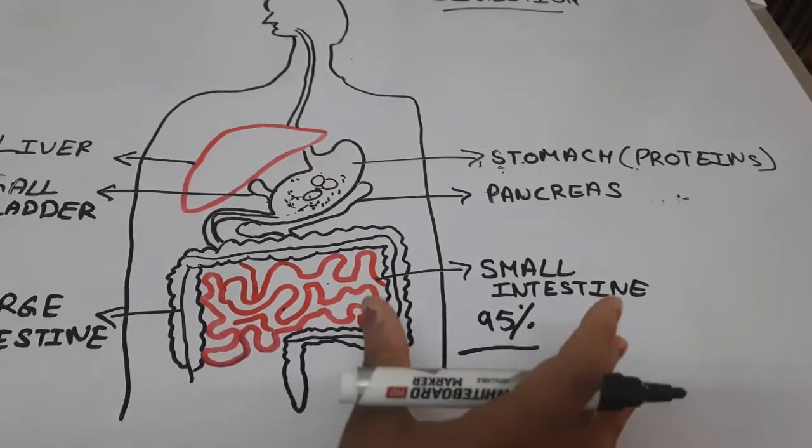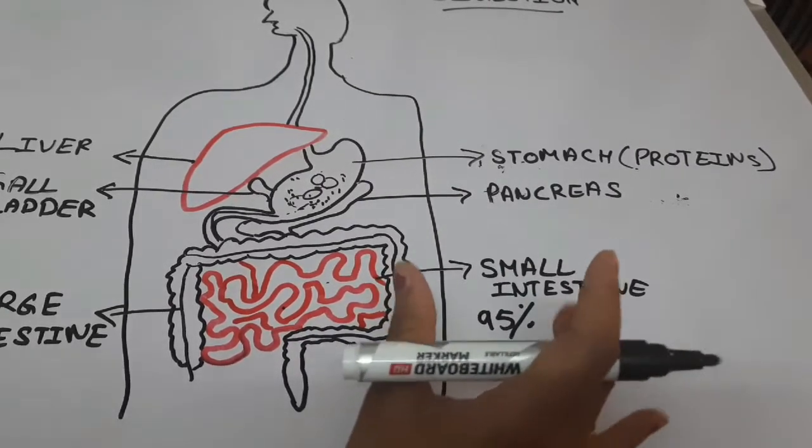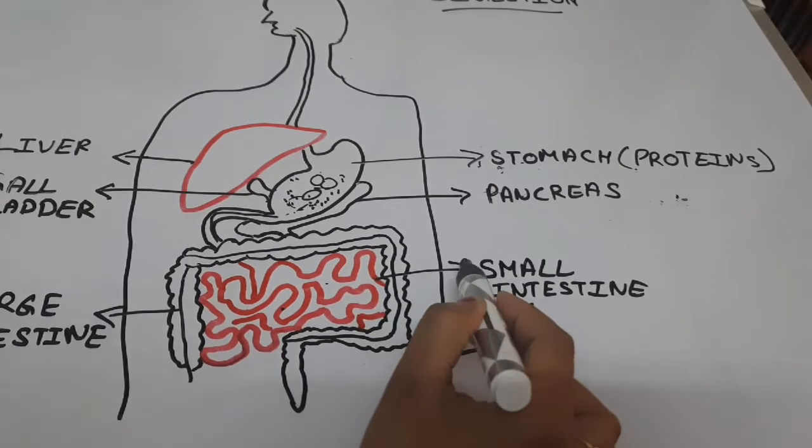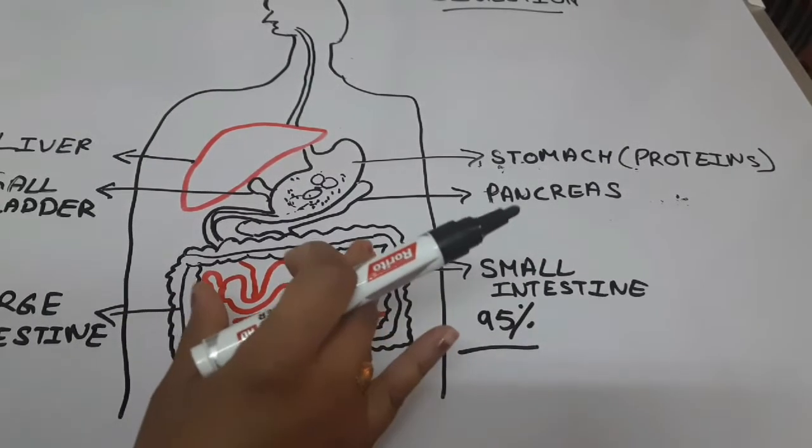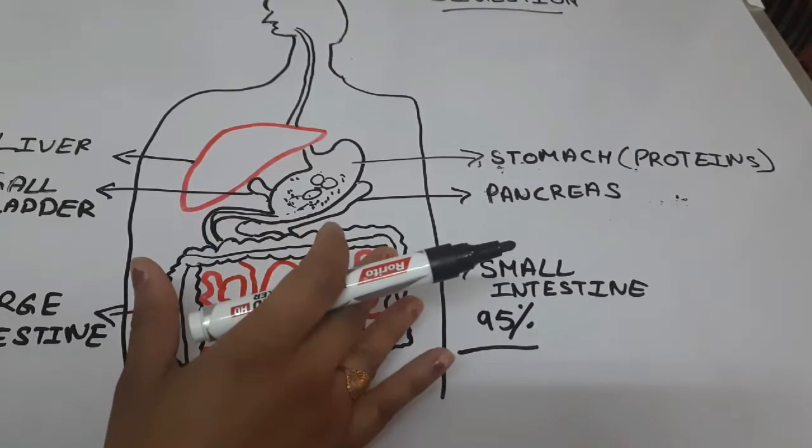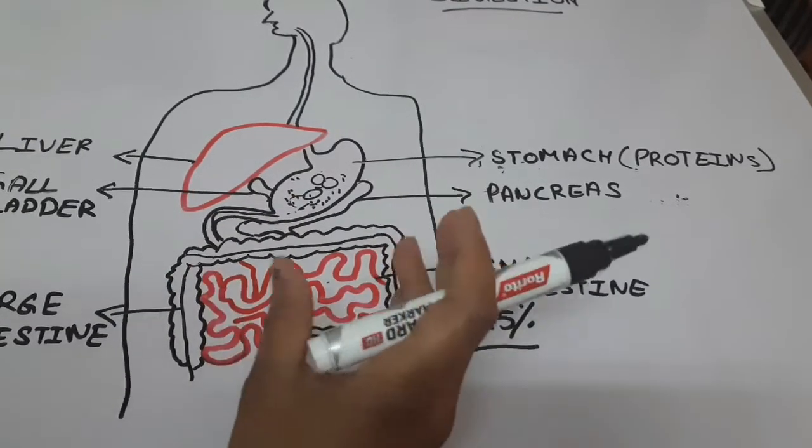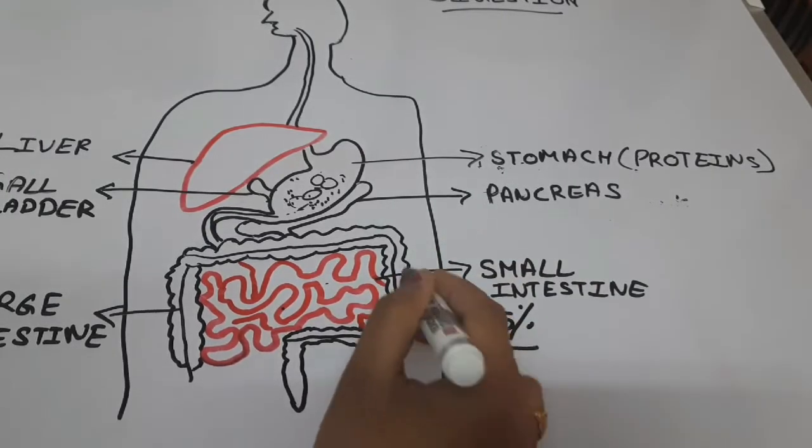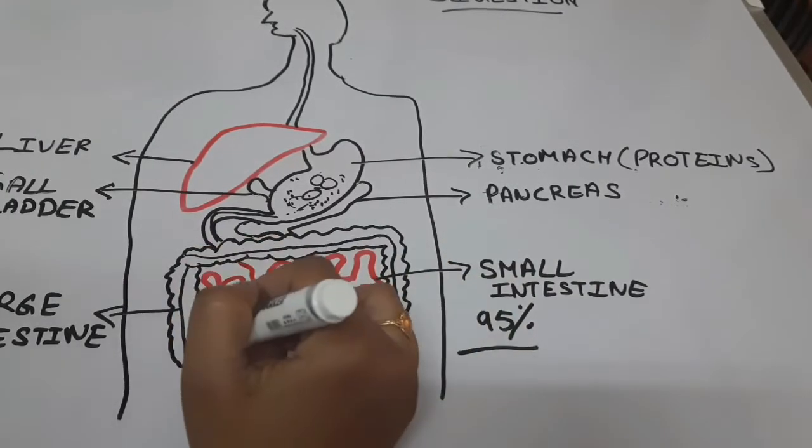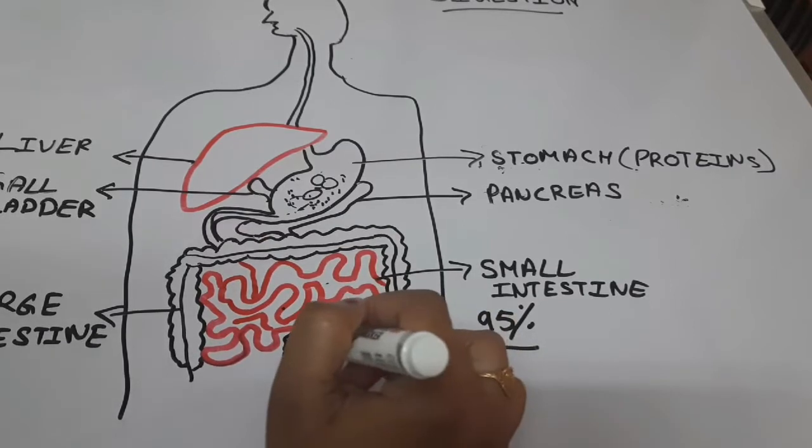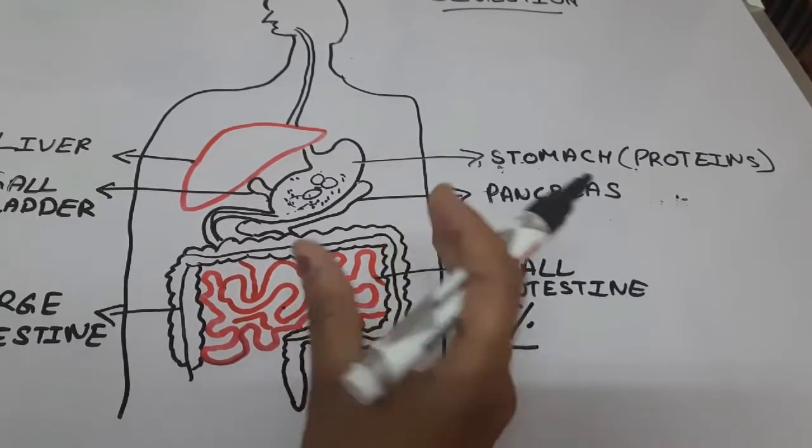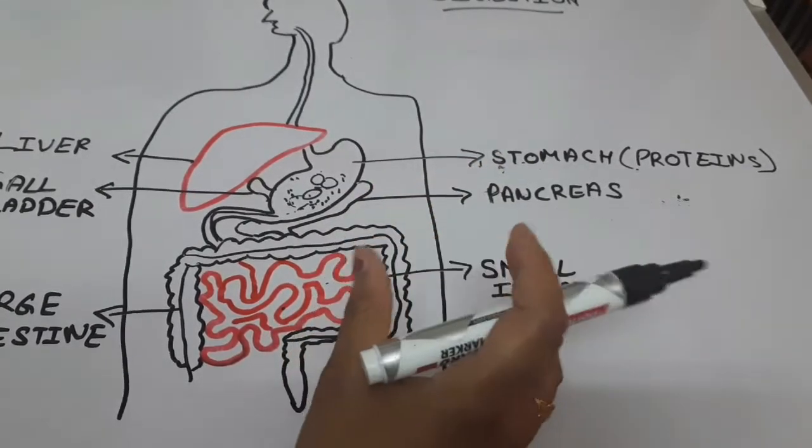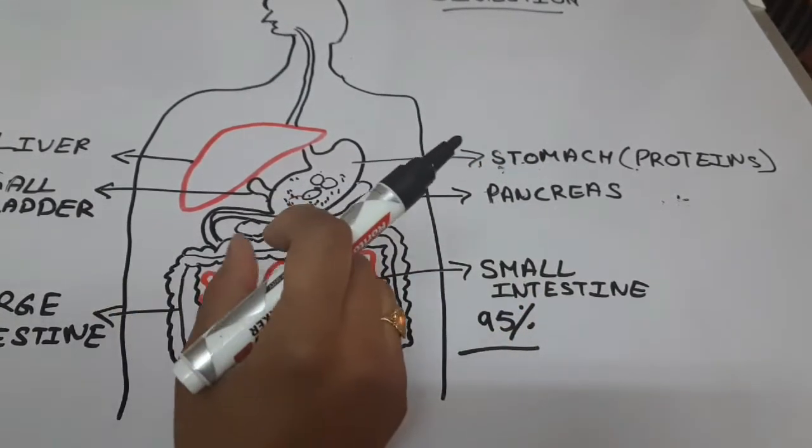95% absorption happens in the small intestine. We get 95% of the nutrients from the food digested in our small intestine. Here most of the digestion process is complete. Then whatever waste or water is left, it goes into the large intestine.